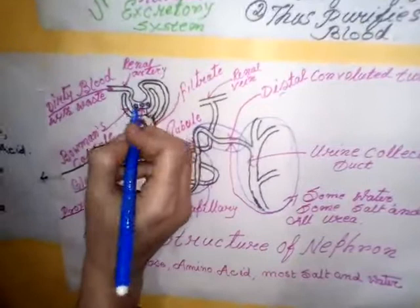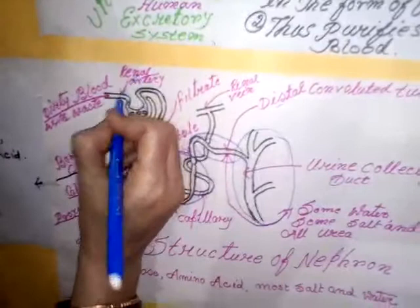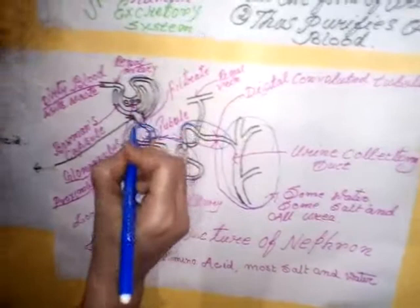One end of the glomerulus remains attached with the renal artery. The other end, after coming out from the Bowman's capsule, surrounds the tubule and ultimately connects with the renal vein.